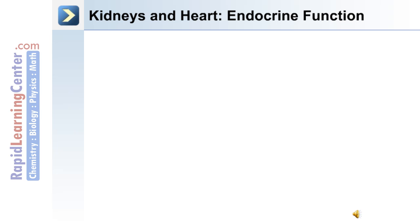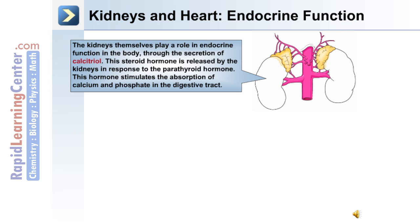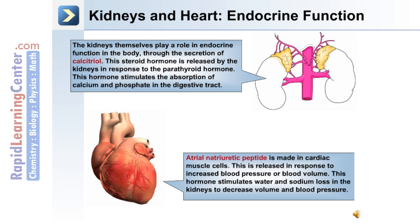Both the kidneys and the heart have endocrine function in the body. The kidneys secrete calcitriol in response to parathyroid hormone, which stimulates the absorption of calcium and phosphate in the digestive tract. Atrial natriuretic peptide is made in cardiac muscle cells and is released in response to increased blood pressure or blood volume. It stimulates water and sodium loss in the kidneys to decrease volume and blood pressure.